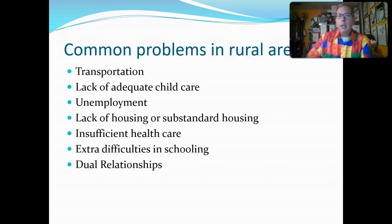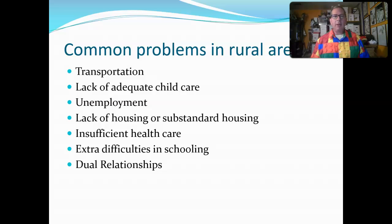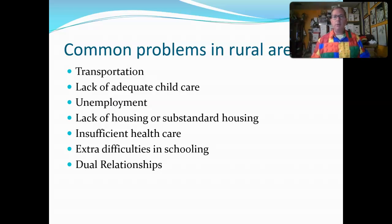Some common problems in rural areas include transportation. People often don't think about this, but if you live in a place that didn't have a grocery store — there are communities within 20 miles of Texas Tech, with over 100 people, that do not have a grocery store — just getting groceries can become a task. Lack of adequate child care or unemployment: if a single industry dominates the whole town and that industry is not doing well, unemployment can become a big issue. There is also lack of housing or substandard housing, and insufficient health care. If a town is not big enough to support a grocery store, they are probably not big enough to support a doctor's office, a dentist, or mental health counseling.